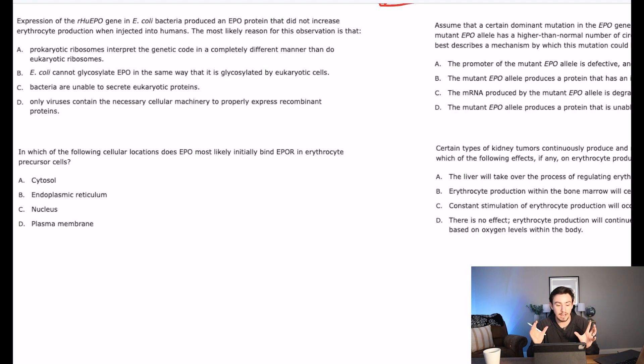A says prokaryotic ribosomes interpret the genetic code in a completely different manner than do eukaryotic ribosomes. That's not true. Remember our ribosomes are all looking at RNA, so maybe not. I know that there are some differences like prokaryotes will go immediately from transcription to translation, but you're reading too much into it if you're looking there. They still are interpreting the genetic code the same. B says E. coli cannot glycosylate EPO in the same way that it is glycosylated by eukaryotic cells. Okay, well where is erythropoietin glycosylated? Probably somewhere like the Golgi apparatus or something like that, right? Maybe like the endoplasmic reticulum. I think it's the Golgi though. Well regardless, does E. coli, does a bacteria have either of those membrane bound organelles? No. So it can't do this. It cannot glycosylate EPO because the location for glycosylation of EPO is a membrane bound organelle. So I like B. That is something that a prokaryote cannot do.